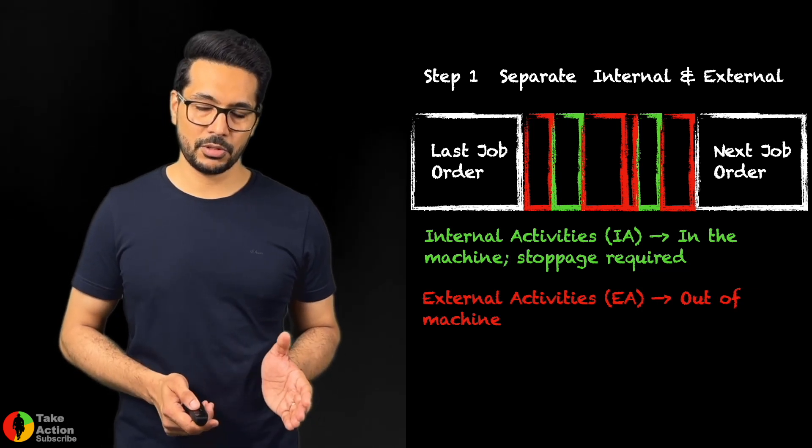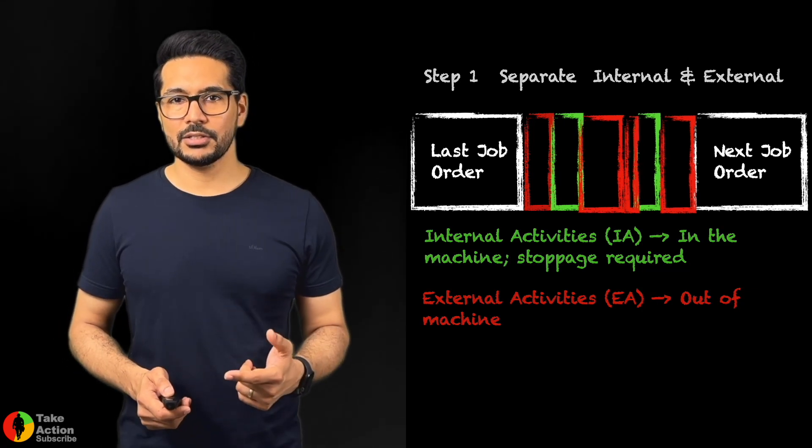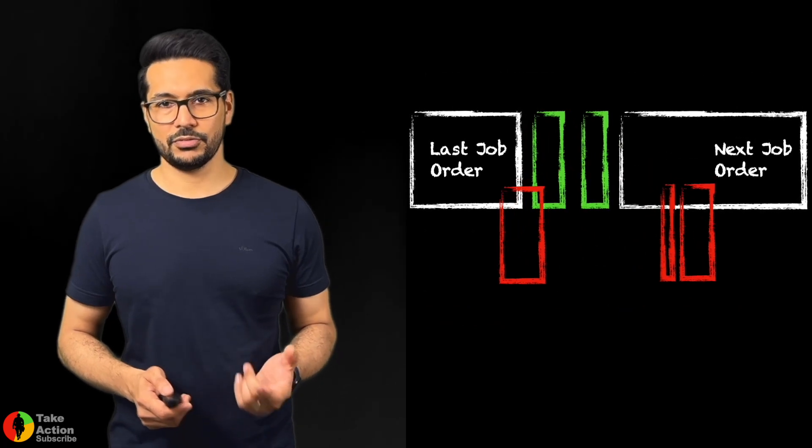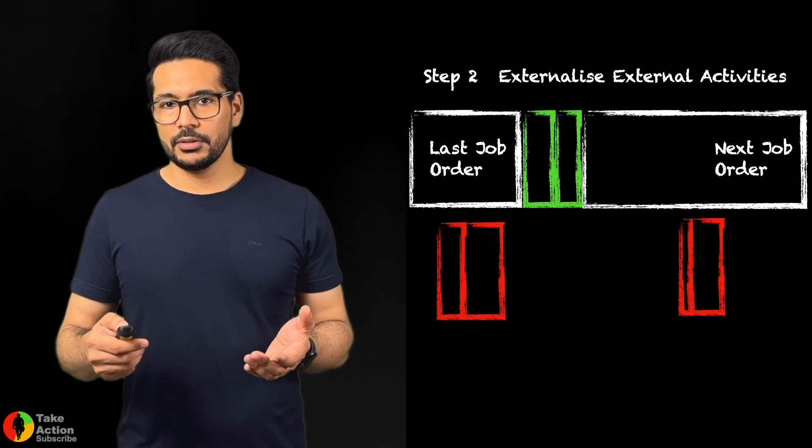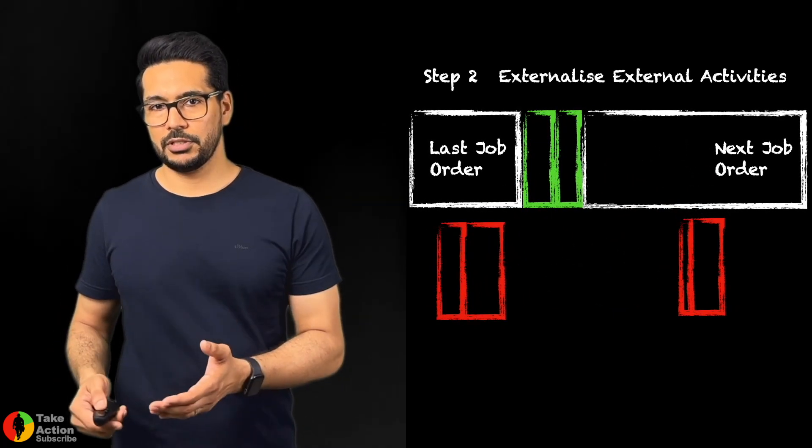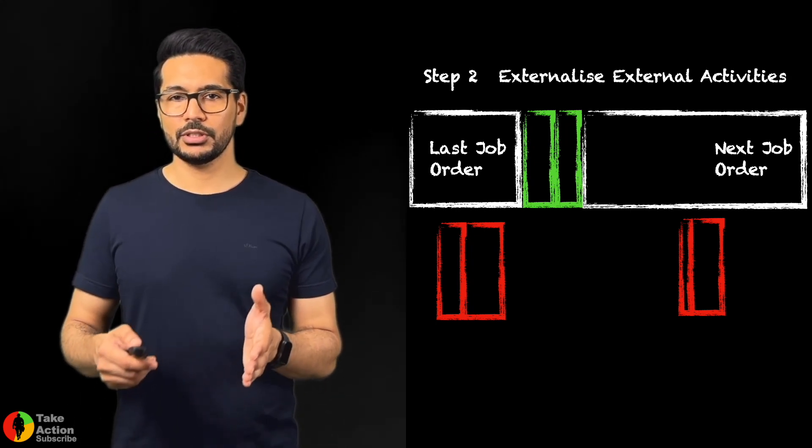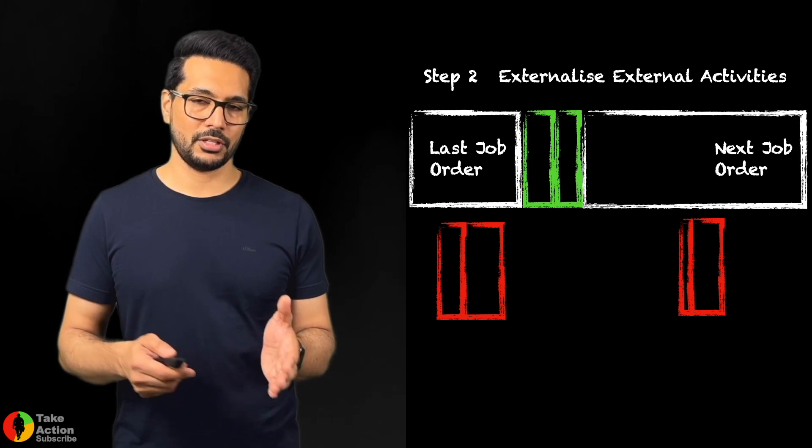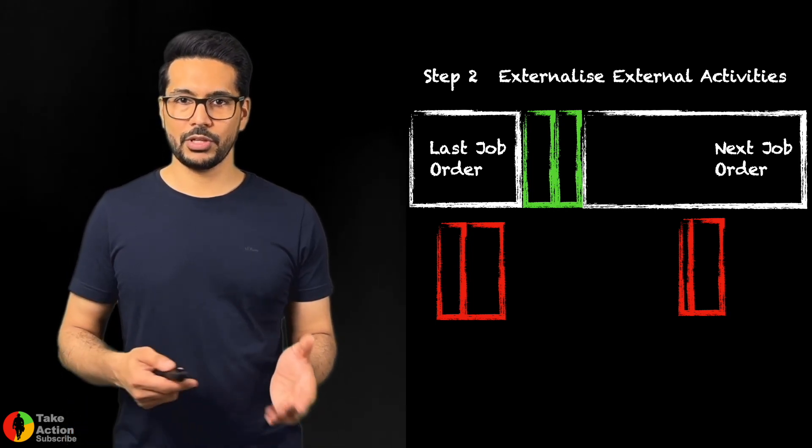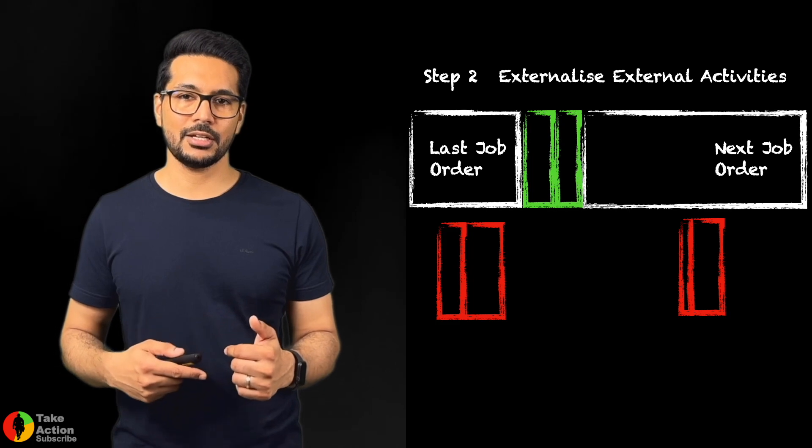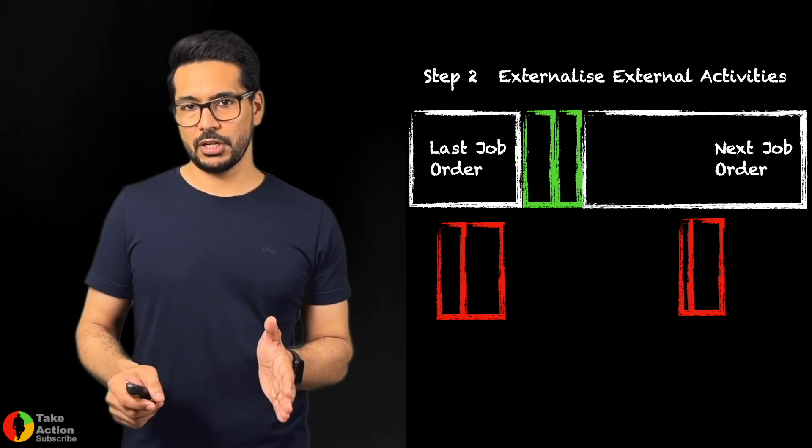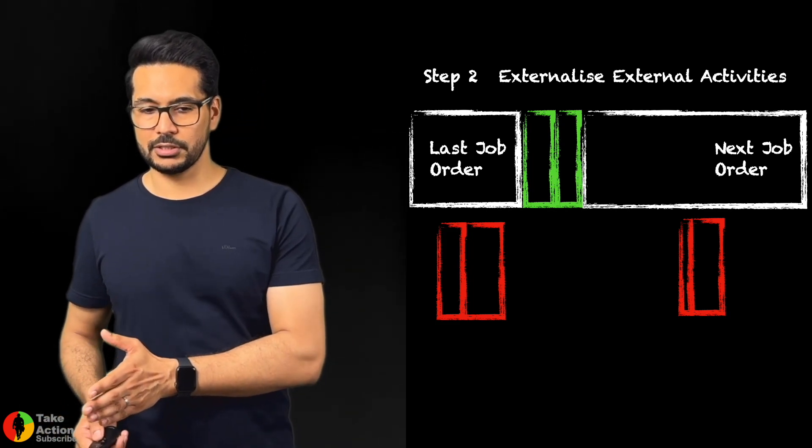The next step, step number two, is to externalize all the external activities. For example, we are doing the entry in the ERP system, so we don't need the machine. So why should we do the entries in the ERP system when the machine is being stopped? So we externalize it.